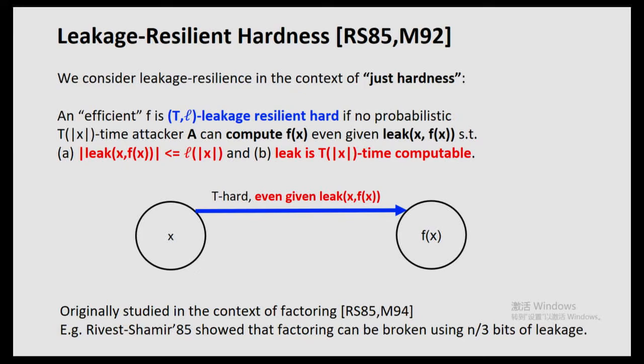This notion of leakage-resilient hardness is not new and was studied in the context of the factoring function. Notably, take F to be the factoring function: the input x is some integer, and the output is P and Q such that P×Q = x. There is a very easy way to compute the factoring function with n/2 bits leakage — just tell me the smaller factor. If P is smaller than Q, require the leakage function to output P; then compute x divided by P and you've factored x. In fact, Rivest-Shamir 1985 showed these simple algorithms can be improved, and factoring can be broken using n/3 bits of leakage. And later, Maurer 1994 showed that n^epsilon bits leakage is all you need.